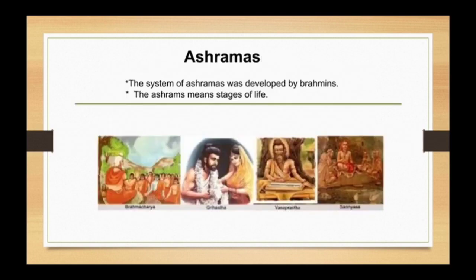Ashramas: while Buddhism and Jainism developed the sanghas and monasteries, the system of Ashramas was developed by Hindu Brahmins. Ashramas were the stages of life. These stages are Brahmacharya, Grahastha, Vanaprastha, and Sanyas. So let's learn about these stages.